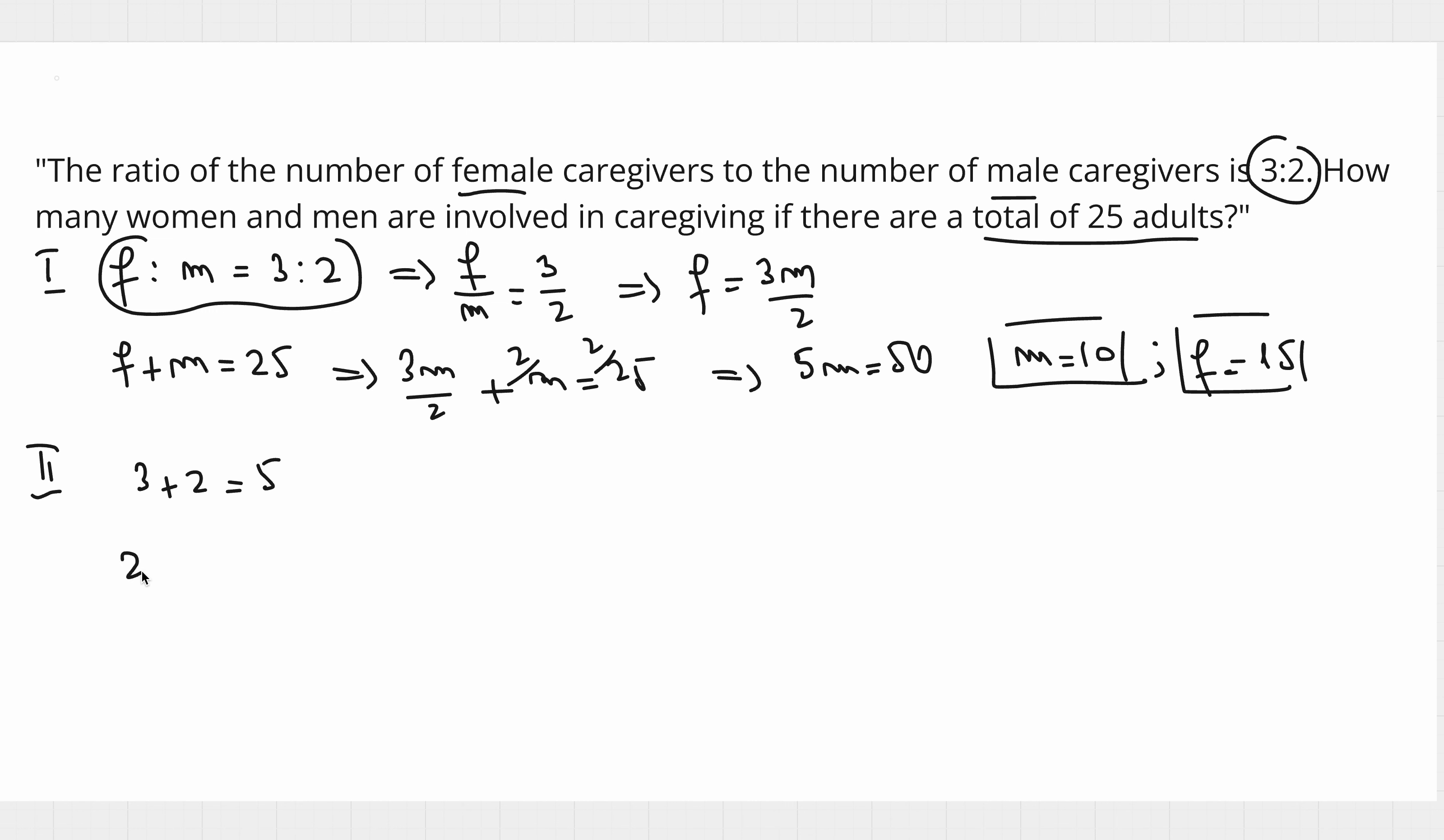We divide the total number of adults by 5, and we will get 5 groups of 3 females, 2 males, 3 females, 2 males—so 5 groups.